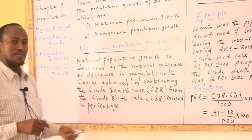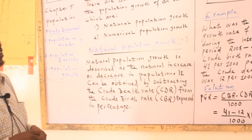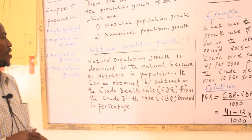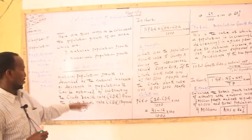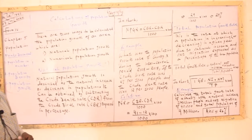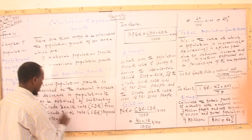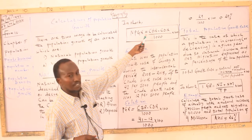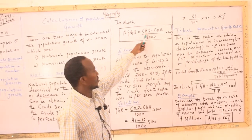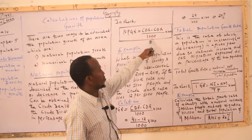The result is expressed as a percentage. This is the definition of natural population growth, which can be positive or negative. This is the definition of natural population growth rate. In short, the natural population growth rate is equal to the birth rate minus the death rate, divided by 1,000, times 100.